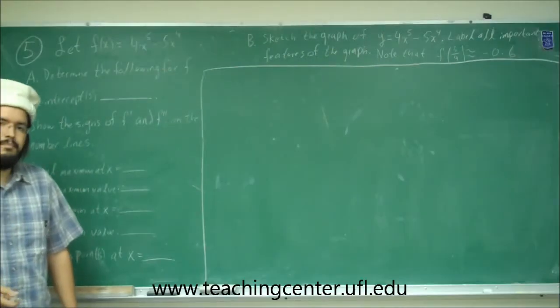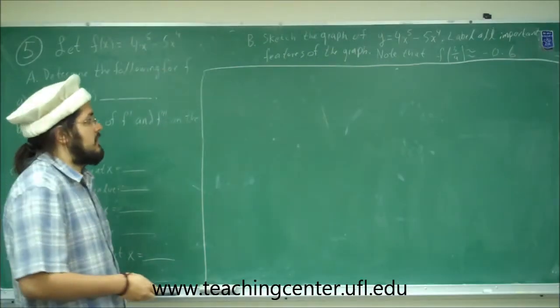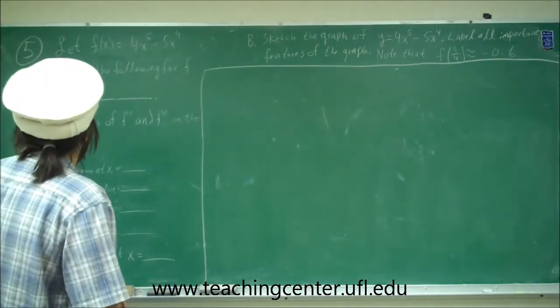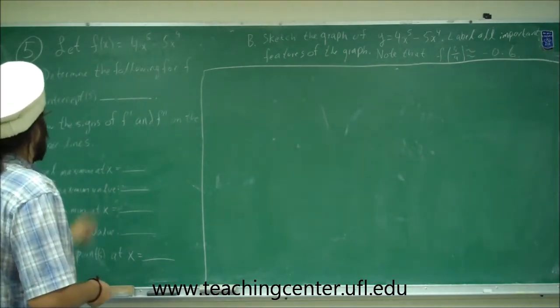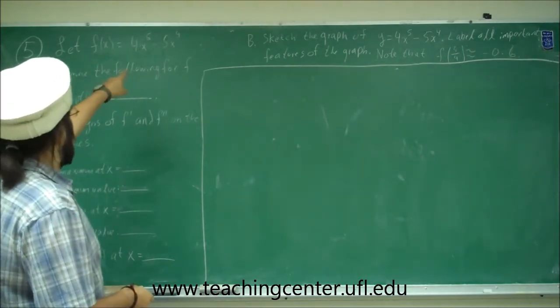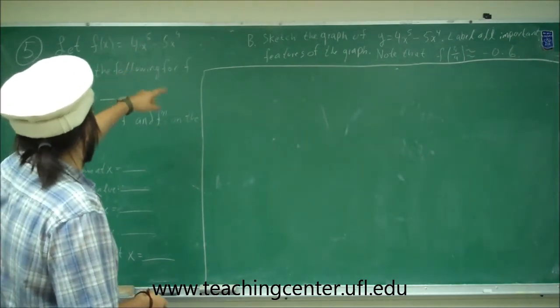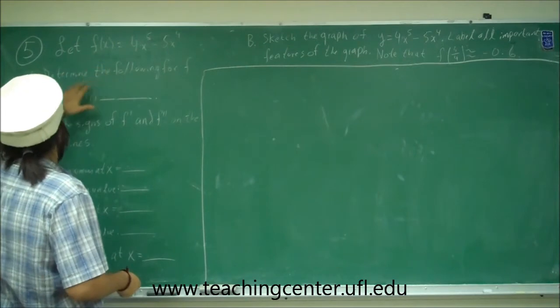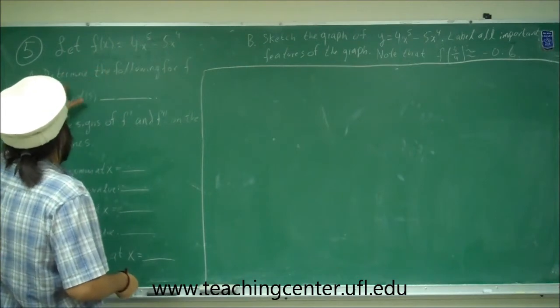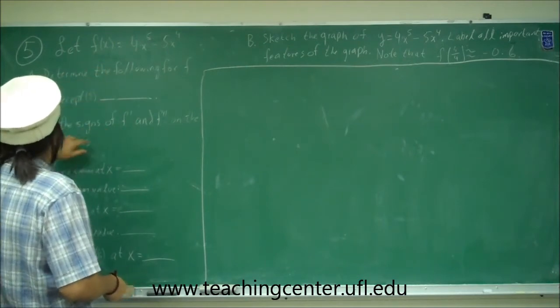Alright, so this is the last problem, problem 5 of the tear-off. Problem 5 reads: let f of x be 4x to the 5th minus 5x to the 4th. And given that, we need to determine the following for f.